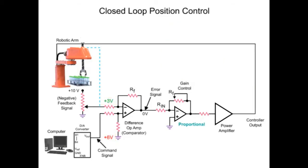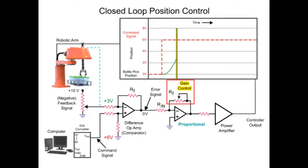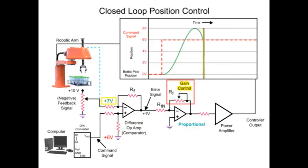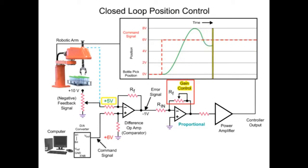To increase the response time of the robotic arm to the command signal, the gain of the proportional amplifier can be increased. However, increasing the gain of the op-amp has a disadvantage where the robotic arm overshoots the targeted position. When this occurs, the feedback signal is greater than the command signal. The op-amp reacts by changing the polarity from positive to negative, resulting in reverse rotation of the arm motor. Although with high gain, the overshoot is repeated again in the opposite direction, and the overshoot of the target position repeats until the robotic arm motor stabilizes.